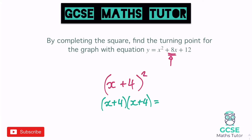Expanding the double bracket, we get x² + 4x + 4x, which gives us 8x, and four times four gives us 16. So it looks very similar to the original, apart from it gives us plus 16 here. We don't want plus 16, we want plus 12, because we're just writing this in a different form — it's the same equation written in completed square form. So in order to get plus 12 and not plus 16, we have to take away four.